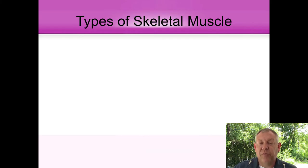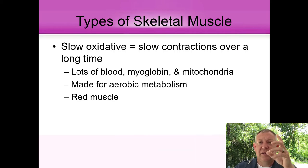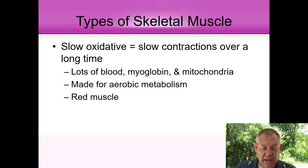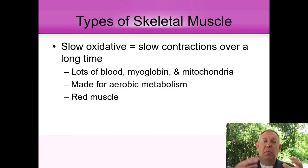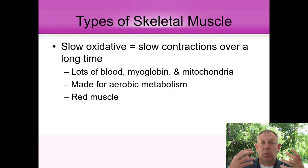There are different general classes of skeletal muscle. First, slow oxidative muscles have slower contractions but don't fatigue easily. They have lots of blood, lots of myoglobin — a type of hemoglobin found in muscles — and lots of mitochondria. They're built for aerobic metabolism and can make and use a lot of ATP. Because of all that blood and myoglobin they have a red tint — this is red muscle or dark meat. If you think about chicken, this is why you have dark meat.